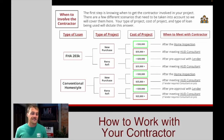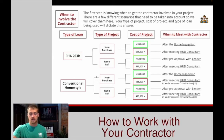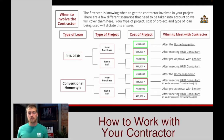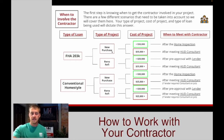Let's start with the FHA 203k, and then you break down by the type of project. You've either got a new purchase or a reno refi — those are the only two options. Are you purchasing a new house, or do you currently live in your home and you're going to be doing a reno refinance on that home? The next question is the cost of the project.